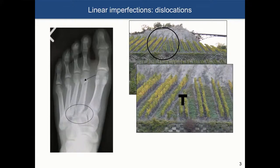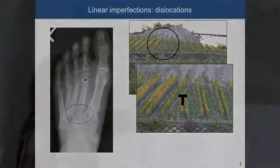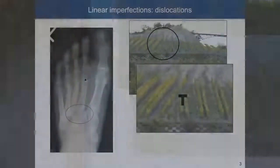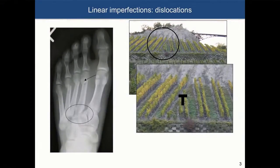During my PhD, I worked on understanding dislocations in gallium nitride, a semiconductor. After four years looking at dislocations, I saw them everywhere. Driving around Switzerland, I saw a vineyard with an extra line that resembled dislocations in crystals. The reason I'm showing this is that there is a periodicity and this extra line, which is there to accommodate for the slope of the hill.